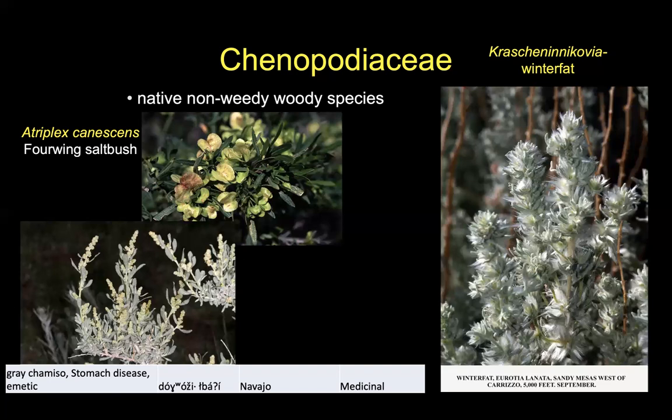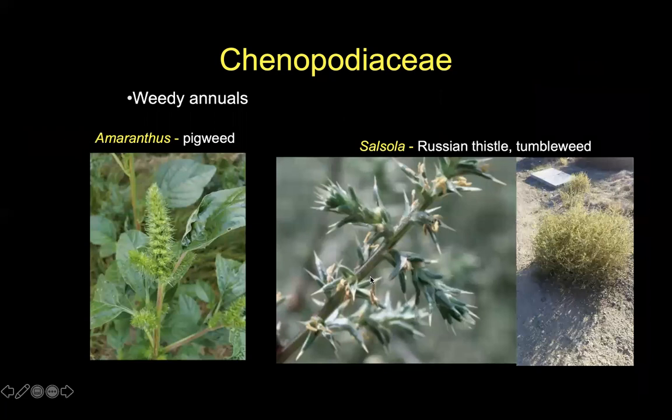Big nasty weeds in this group include Amaranthus, or pigweed — many species, some quite bad, getting huge in fields and messing up farming equipment. Another problematic one is tumbleweed or Russian thistle, the genus Salsola. Being a tumbleweed — having the entire vegetative body form a globose shape and severing at the base to tumble about — has evolved repeatedly. The leaves are reflexed, folding back, with spiky tips and very tiny flowers.